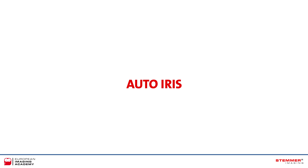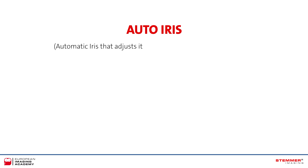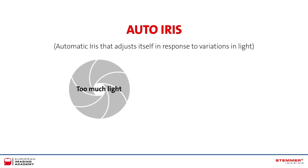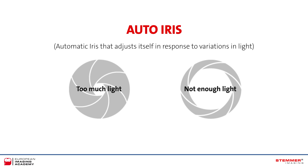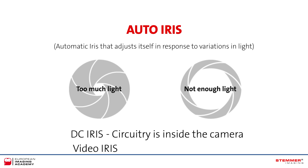So what is an auto iris system? As the name suggests, it is an automatic iris that changes in response to variations in light levels. If there's too much light, the circuitry converts the signal into one that mechanically reduces the size of the iris. Too little and it opens up. In a DC iris system, the circuitry is inside the camera, while in a video iris it's in the lens. This system does not respond to anything but light level changes, so although it may adjust the amount of light reaching the sensor, other image qualities such as depth of field cannot be controlled.